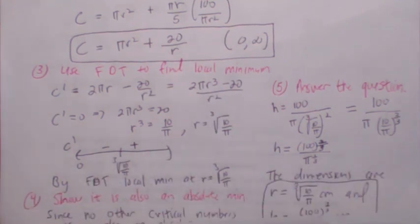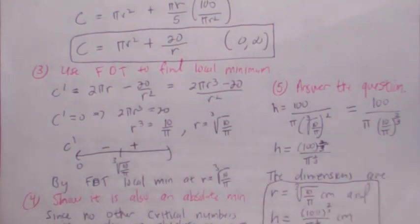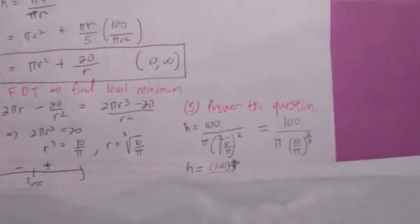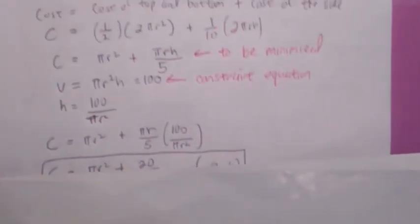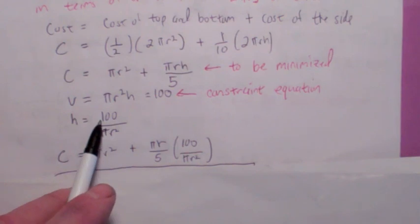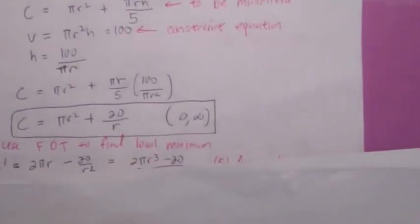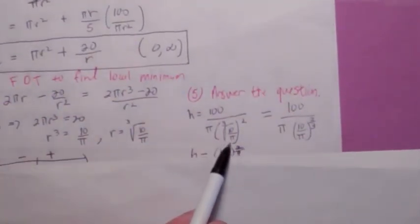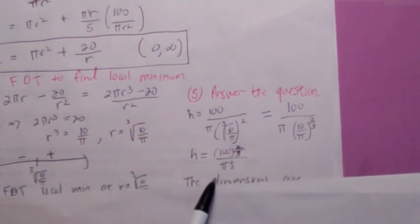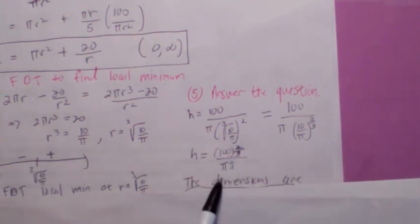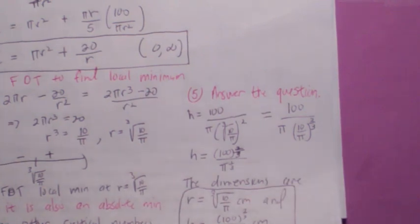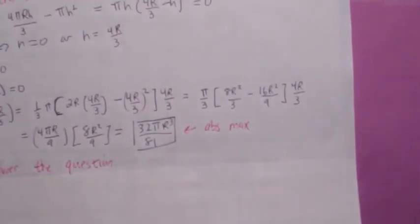Since there are no other critical numbers, this local minimum is also an absolute minimum. To answer the question fully, you also need to find h — that's 100 over pi r squared. When you plug in cube root of 10 over pi for r and simplify, you get h equals 100 to the two-thirds over pi to the one-third. Those are the dimensions that minimize the cost.